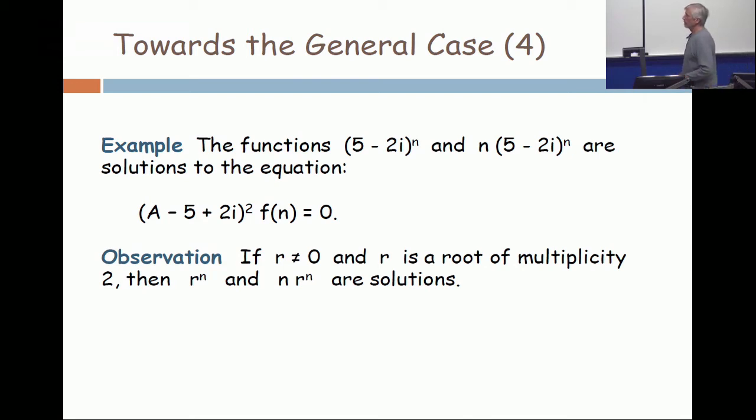Passing over to the complex numbers, look at the quadratic equation: (A - 5 + 2i)² operating on f(n) equals 0. So the factor is A minus 5 plus 2i, so the root is 5 minus 2i, but it's a root of multiplicity 2.